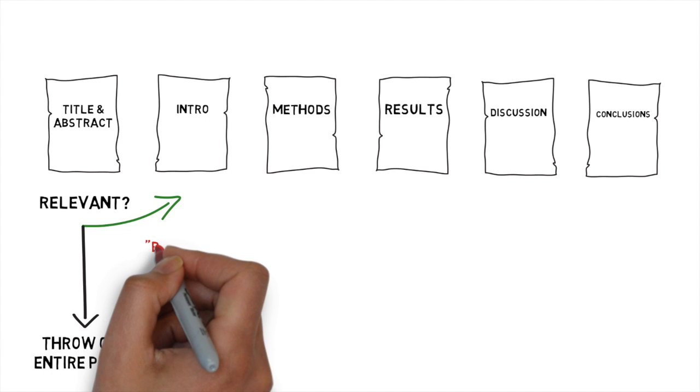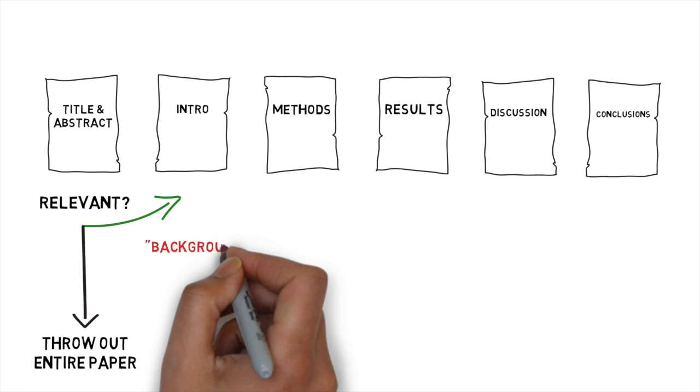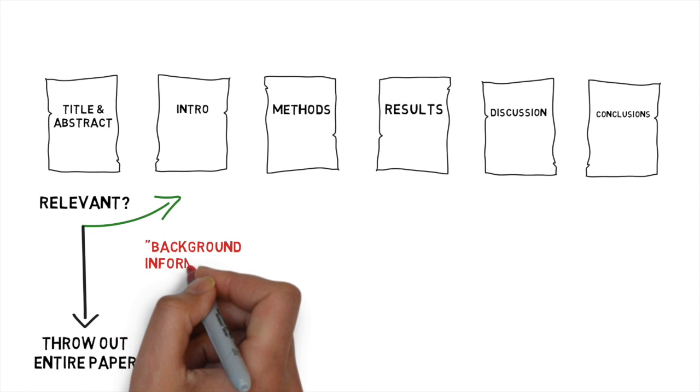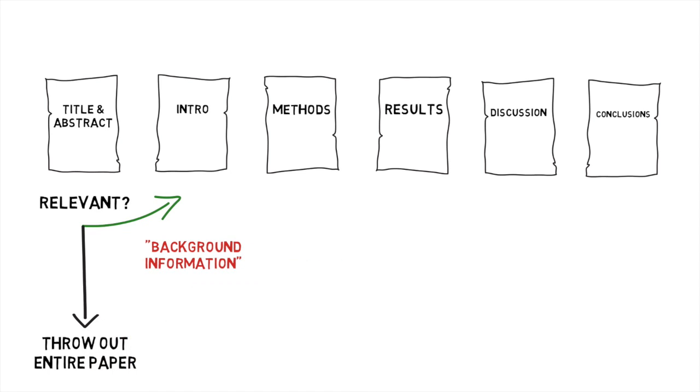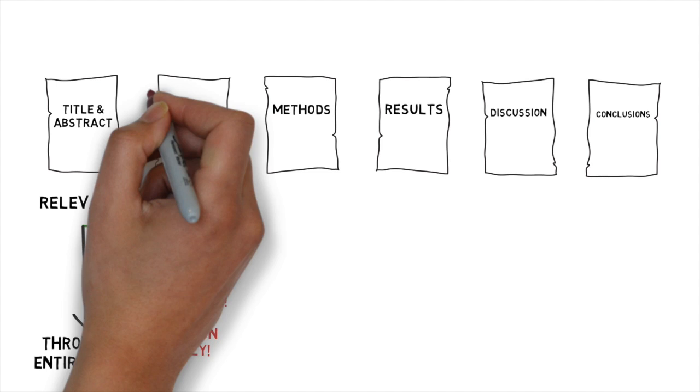Next is the introduction section. What you have to remember about the introduction section is the authors are trying to provide some background information. What the introduction is not is a systematic review on the topic. The authors may or may not be providing information in the introduction section that really justifies the rest of the research. It's not necessarily an unbiased review of the topic. Knowing this, I usually skip the introduction.